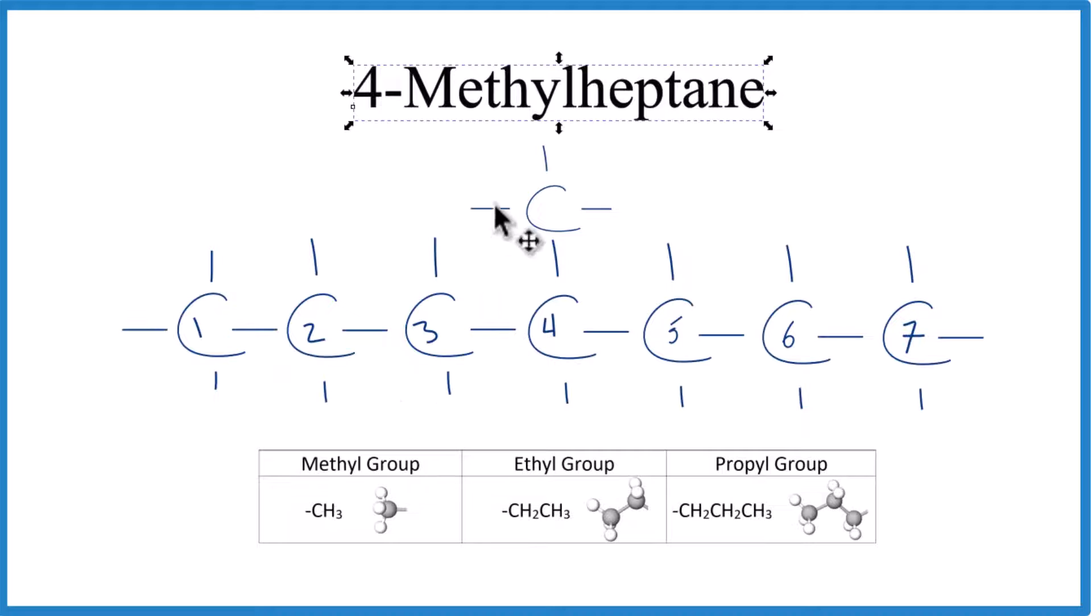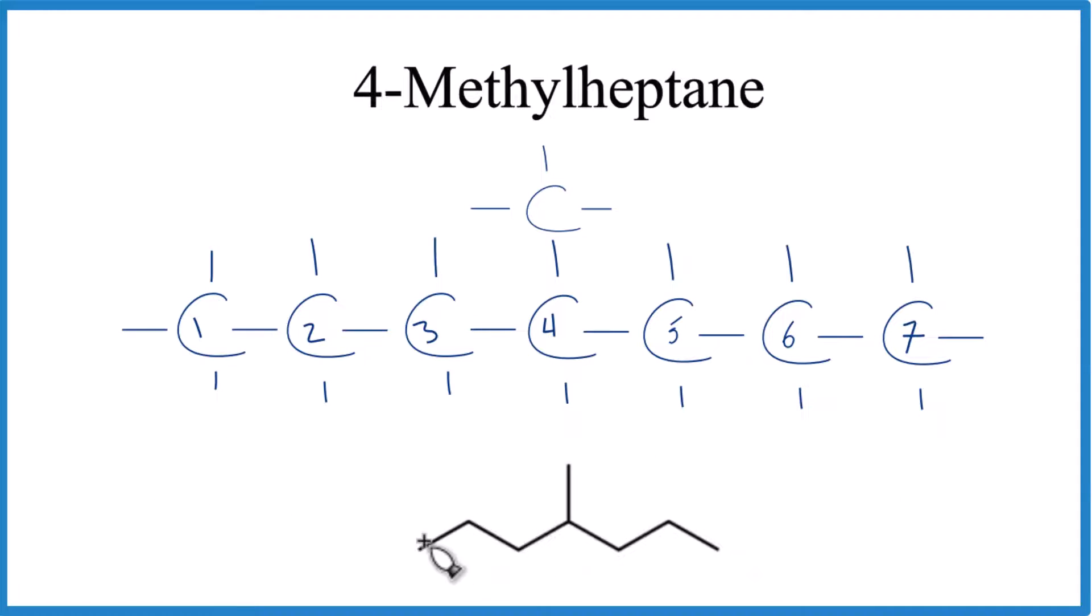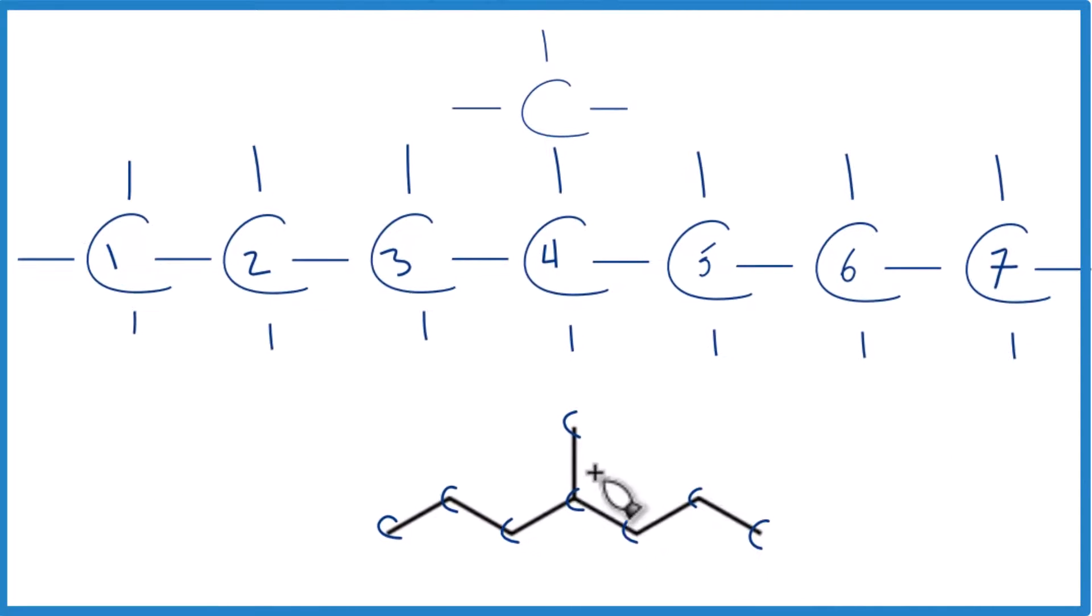There it is. That's the structure for 4-methylheptane. Sometimes you'll see it drawn like this here. We have our carbon atoms. We have our chain of seven. That's the heptane.